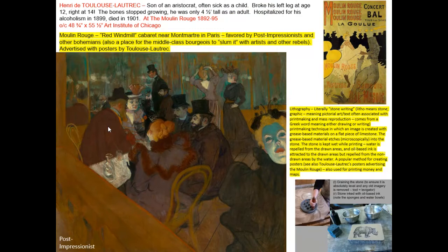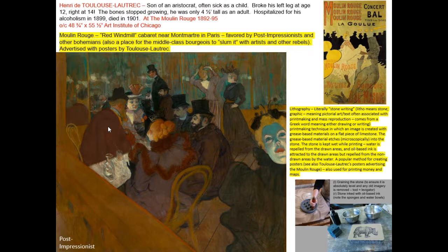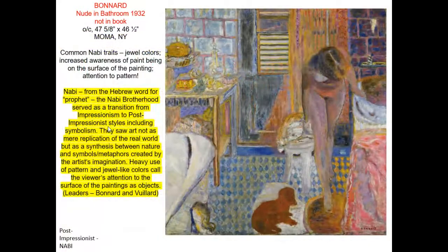Toulouse-Lautrec is another Post-Impressionist painter using evident brushstroke but much larger flat areas of color. This image is of the Moulin Rouge — the name translates as 'the red windmill,' one of the architectural features of this particular cabaret dance hall. It was a place where counter-culture people met. Toulouse-Lautrec advertised the entertainments of the Moulin Rouge in lithographic print posters, examples of which you can see in the upper right.